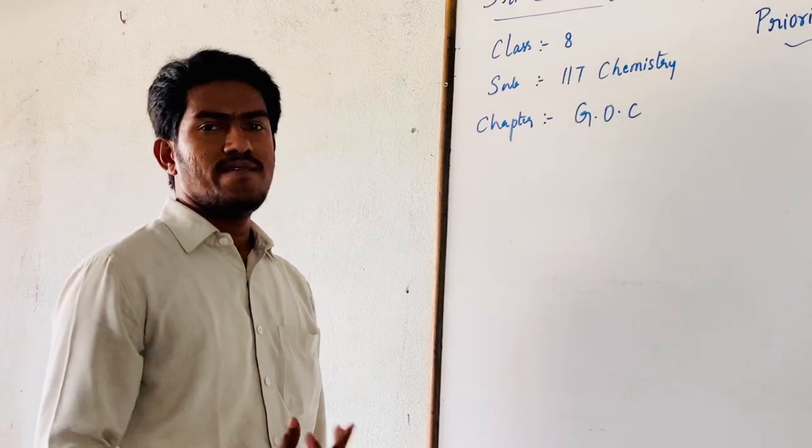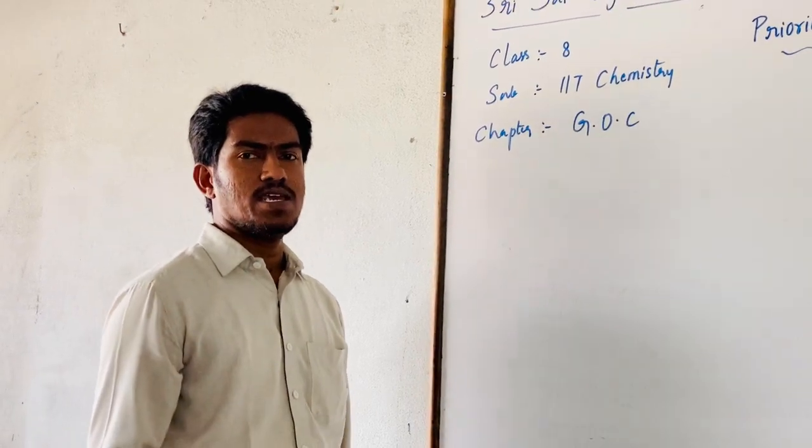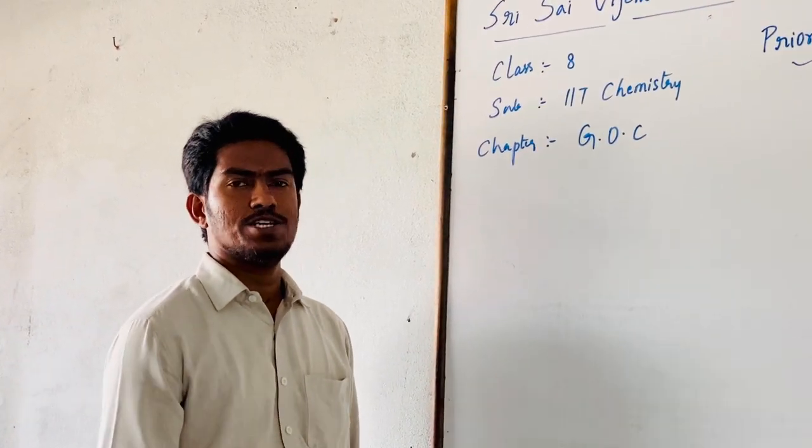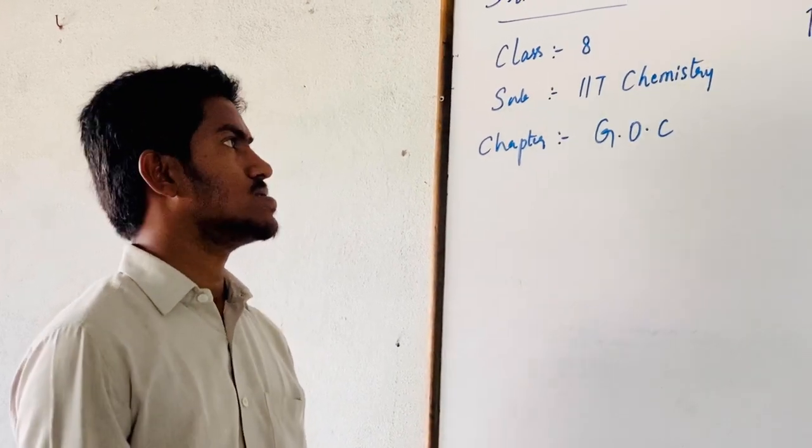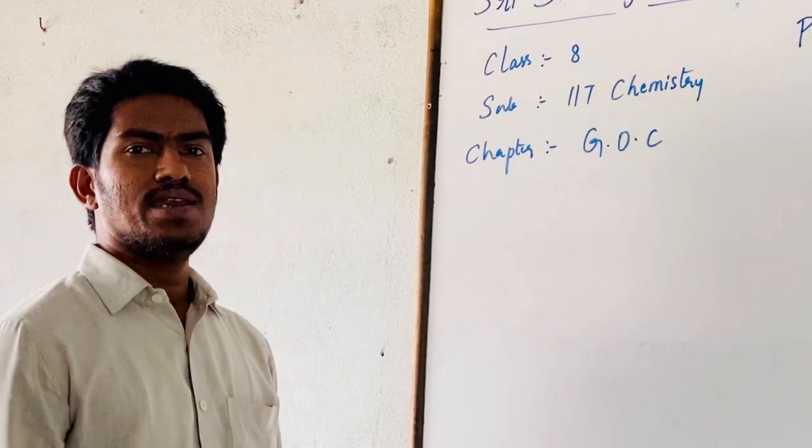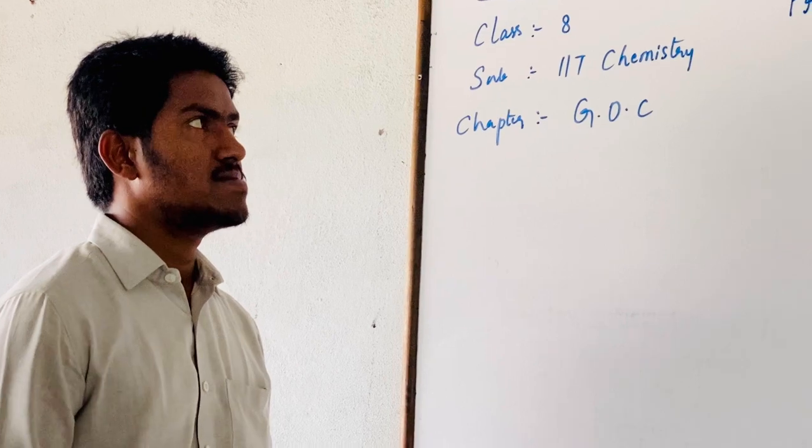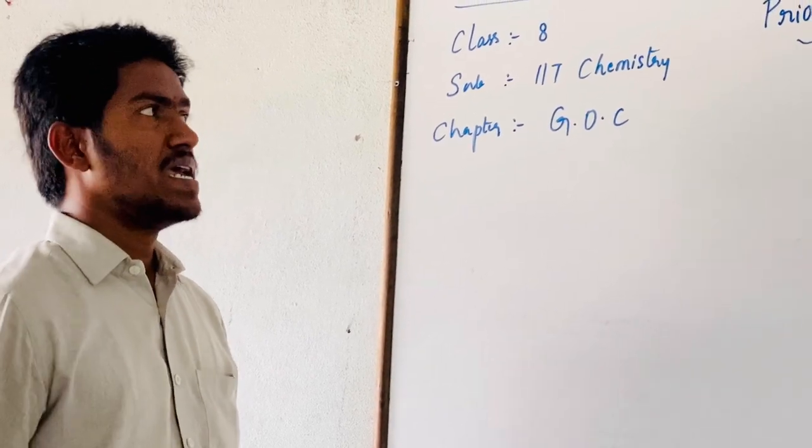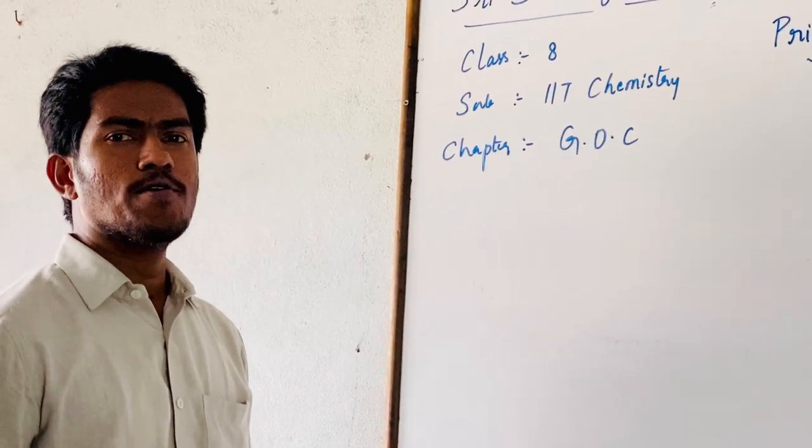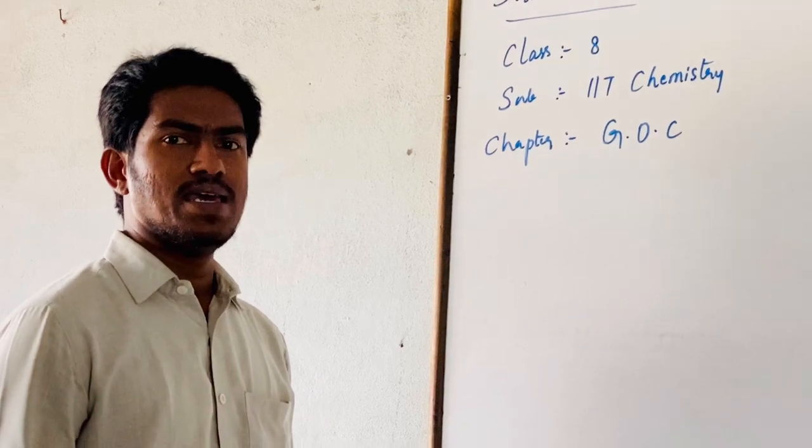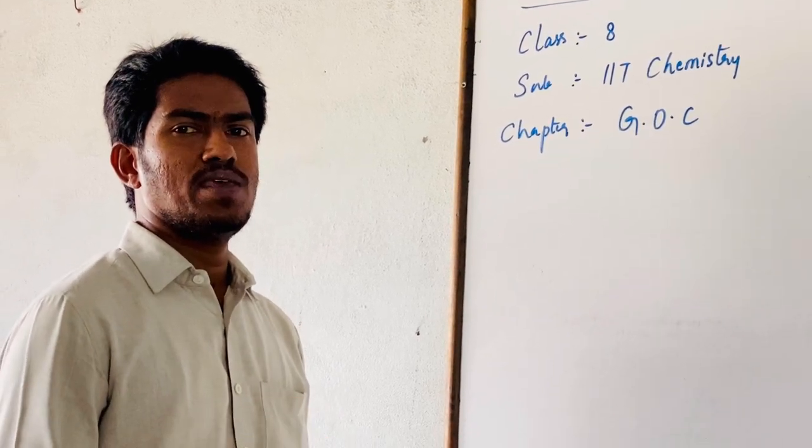Now in the previous class, we have discussed the general structure, nomenclature, and organic components. In that one, the secondary suffix represents functional group. If we give a compound that contains more than one functional group, then how can we give the priority order?